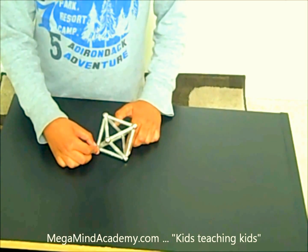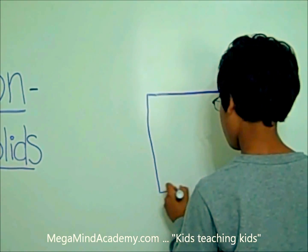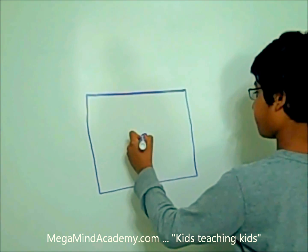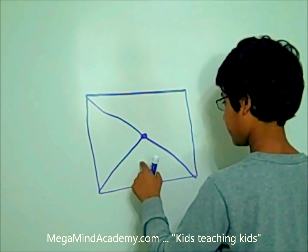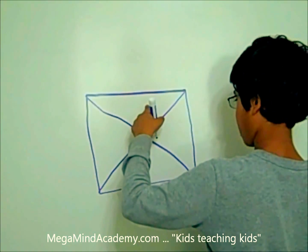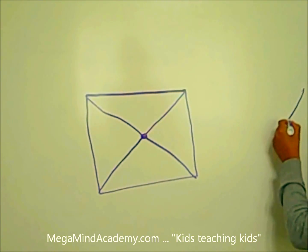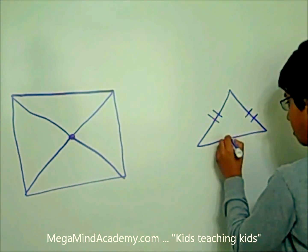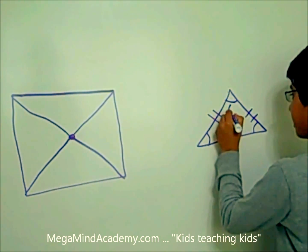So let me show you what I saw. Let's say this is a vertex. This is the first face, this is the second face, this is the third face, and this is the fourth face. As I said before, the faces are equilateral triangles, so the sides are equal in length, the angles are equal in degrees, and that means the angles are 60 degrees.